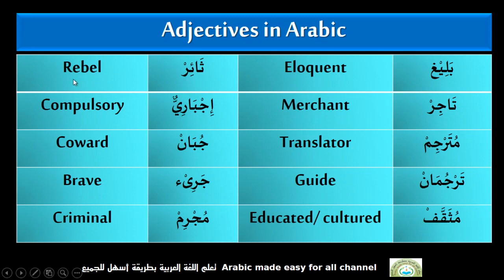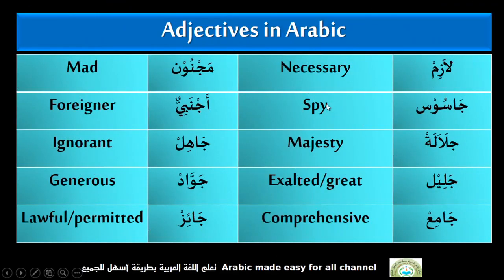Sa'id — Rebel. Ejbariun — Compulsory. Juban — Coward. Jari — Brave. Mujirim — Criminal. Blazing — Necessary. Jasoos — Spy. Jalala — Majesty. Jalil — Exalted, Great. Jami — Comprehensive. Majnoon — Mad. Ajnabiyun — Foreigner. Jahil — Ignorant. Jawad — Generous. Jaij — Lawful, Permitted.